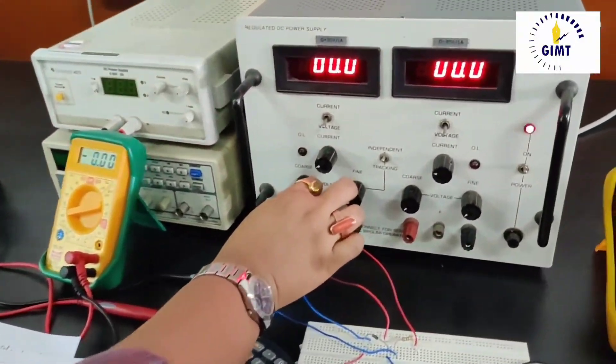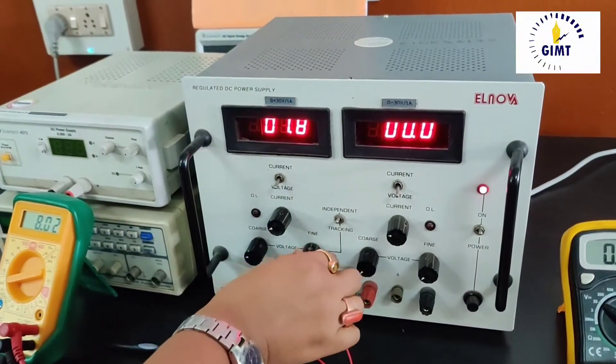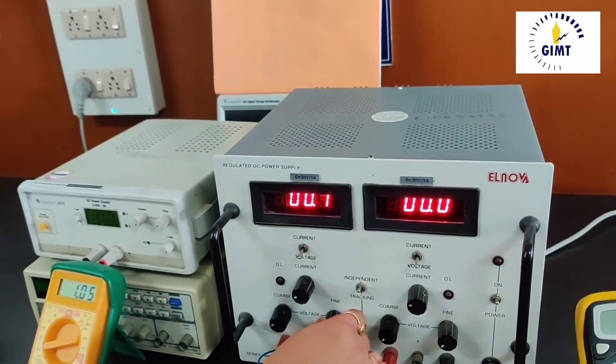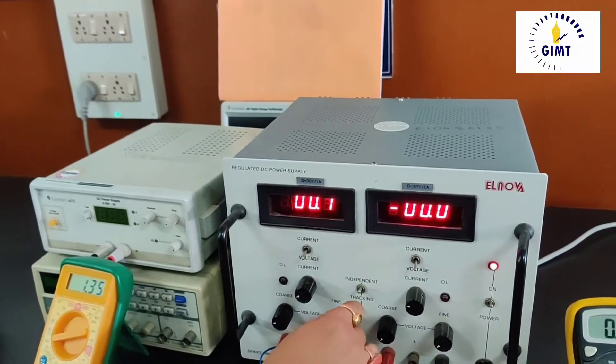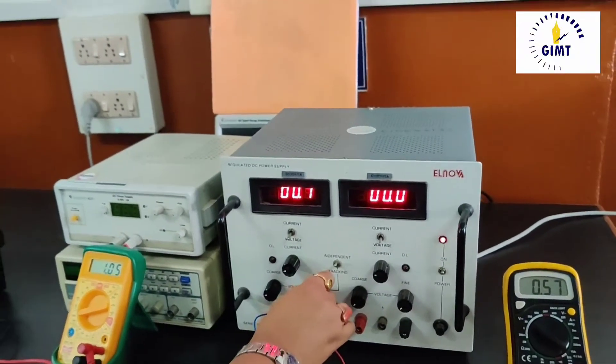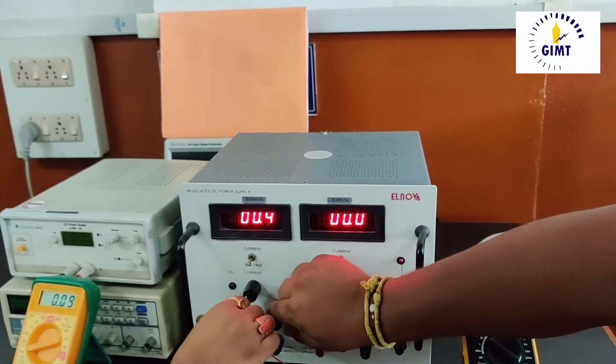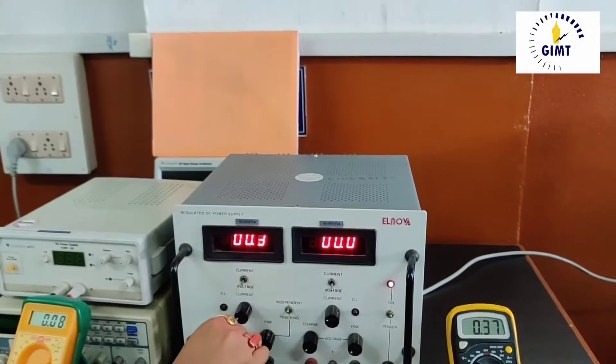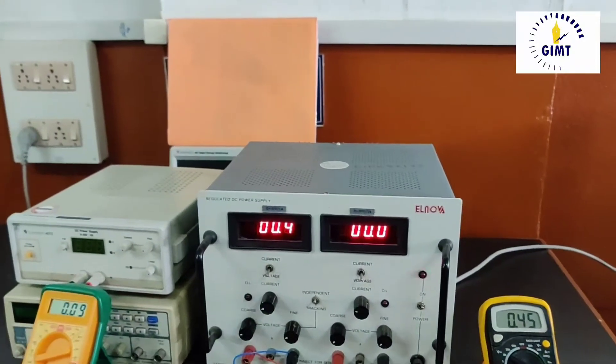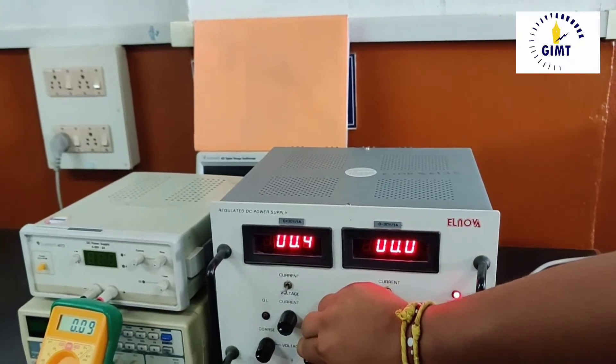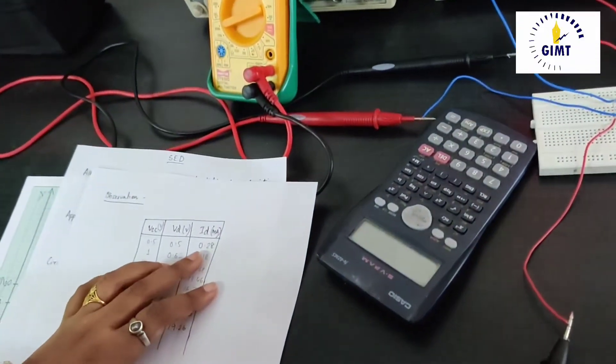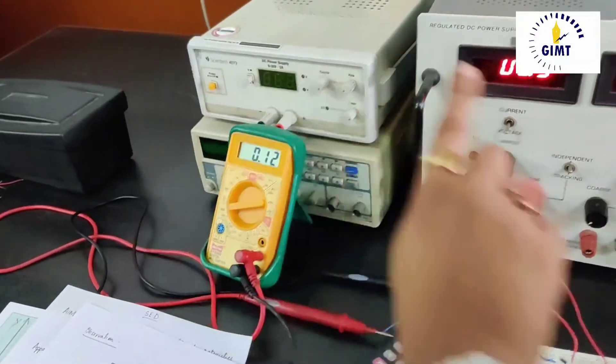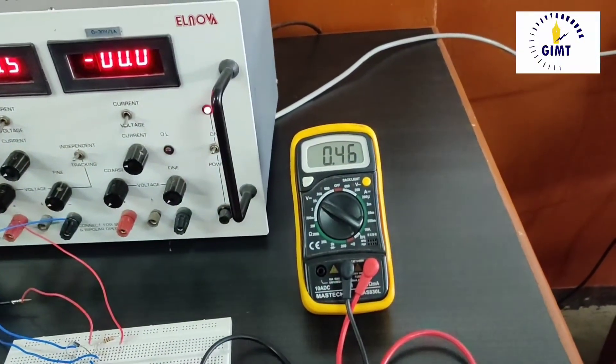I want to show you here, if I take the reading at 0.5 volt, at 0.5 volt the current showing is 0.12 milliampere. And the diode voltage is 0.46 volt.